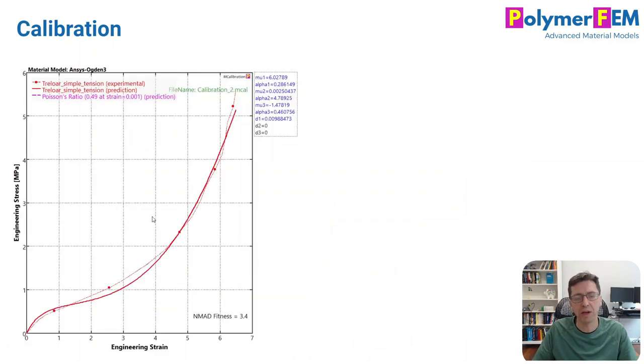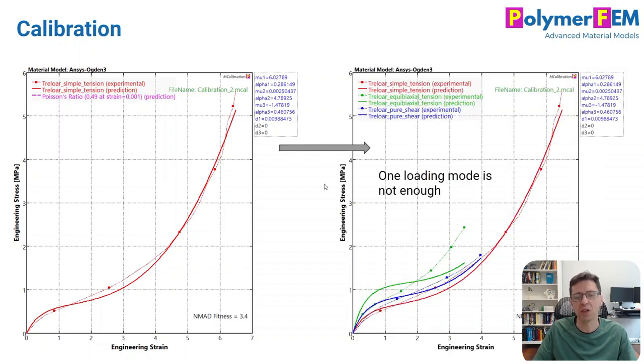So what I will do, I will first calibrate my three term Ogden model to just the tension data. And that's what's shown here. The red solid curve is the prediction and it looks pretty good. The error is small. It corresponds well to the experimental data.